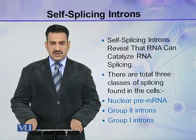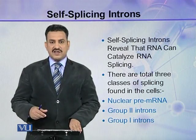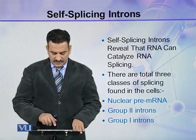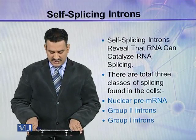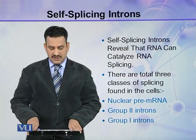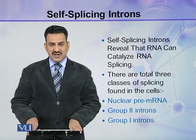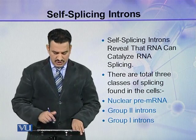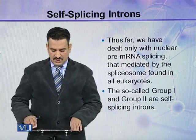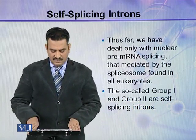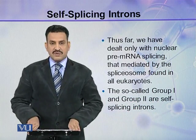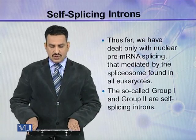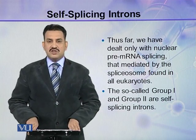Self-splicing introns reveal that RNA can catalyze RNA splicing. There are three total classes of splicing found in cells: nuclear pre-mRNA, group 2 introns, and group 1 introns. Thus far, we have dealt only with nuclear pre-mRNA splicing that is mediated by the spliceosome found in all eukaryotes.